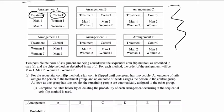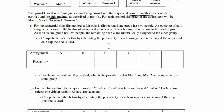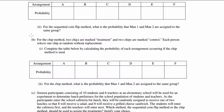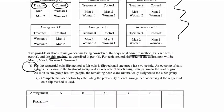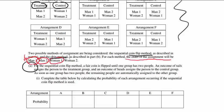Two possible methods of assignment are considered: a coin flip method and a chip method. Coin flip method is going to be part A, chip method is going to be part B, and we are going to have part C as described in part B. For each method, the order of assignment will be man 1, man 2, woman 1, woman 2. This small thing is very important — man 1 goes first, he is put into some group, then man 2, then woman 1, then woman 2.